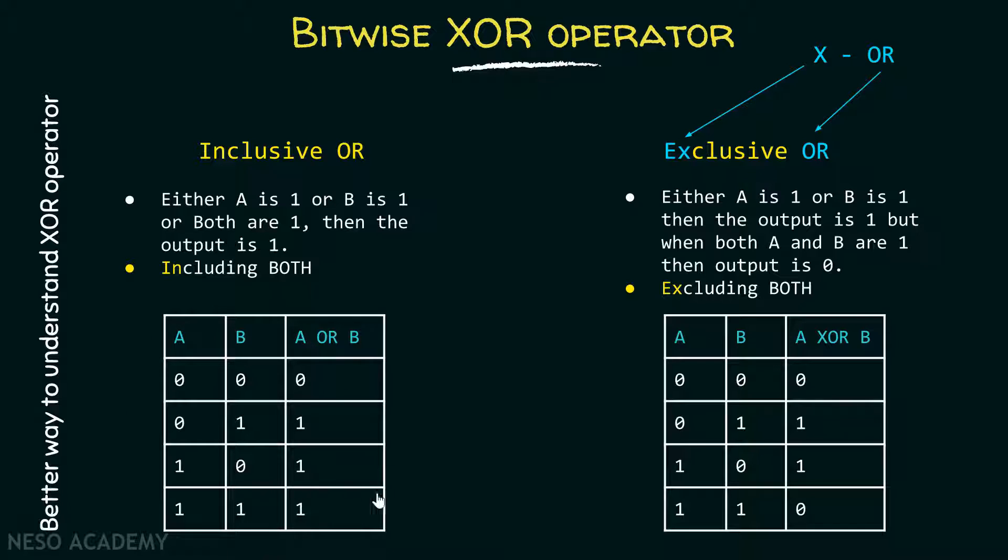Isn't this truth table like a truth table for OR operator? That is what we need to know. OR operator and inclusive OR operator both are one and the same thing. Inclusive OR operator is the second name of OR operator.